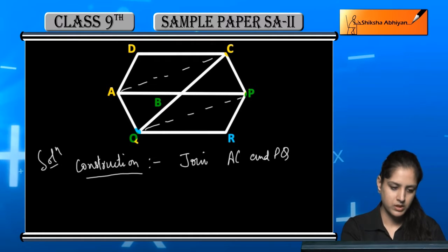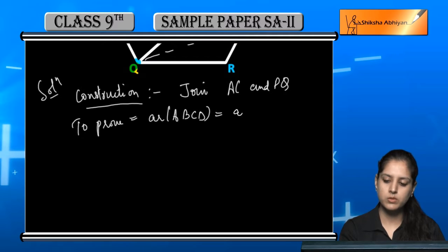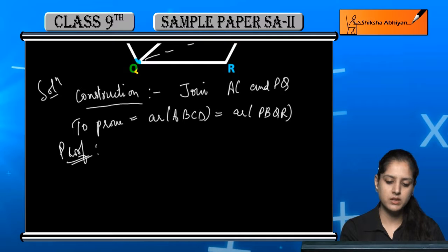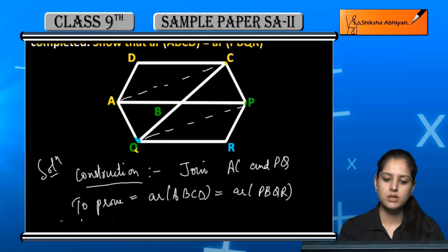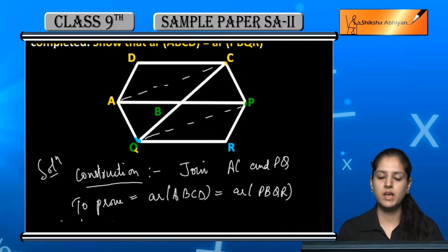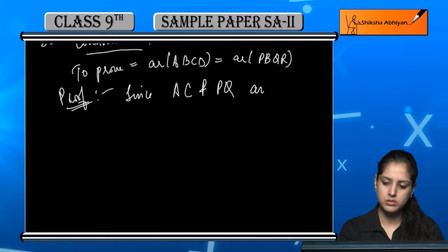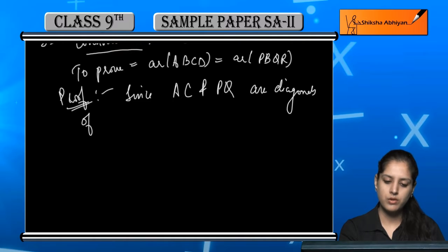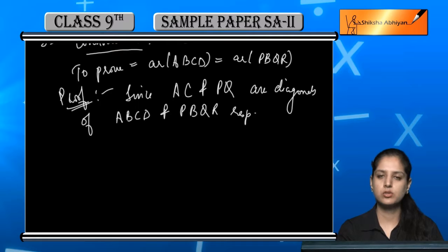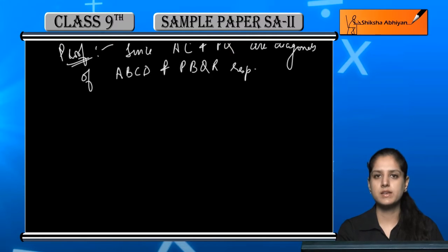तो ये resultant figure आ जाएगी हमारे पास. अब हम prove करना चाह रहे हैं: To prove — area of ABCD is equal to area of PBQR. Since AC and PQ are diagonals of ABCD and PBQR respectively, और जब भी कोई diagonal होता है, वो एक parallelogram को दो equal area वाले triangles में divide कर देता है.